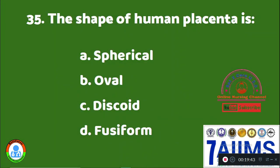Question 35: The shape of the human placenta is: Option A: spherical. Option B: oval. Option C: discoid. Option D: fusiform. The right answer is Option B, oval shape.